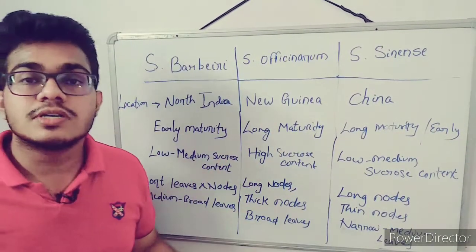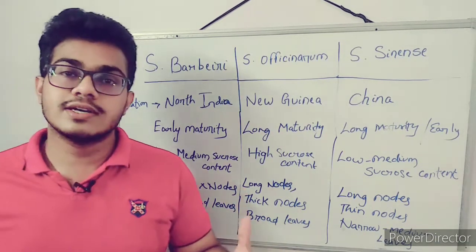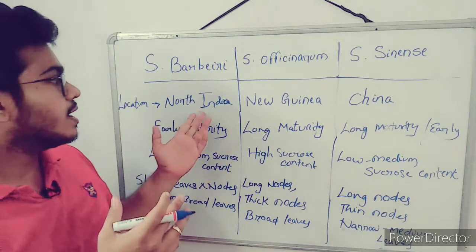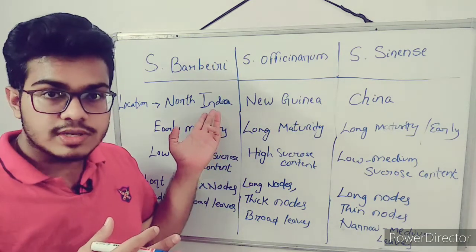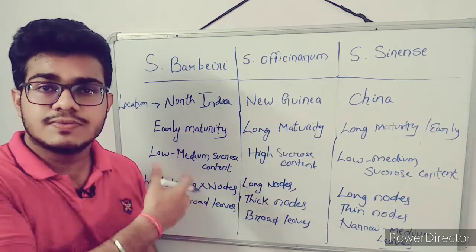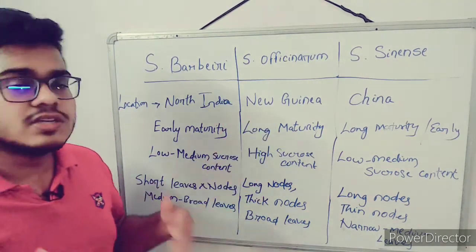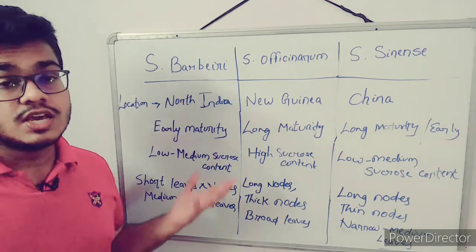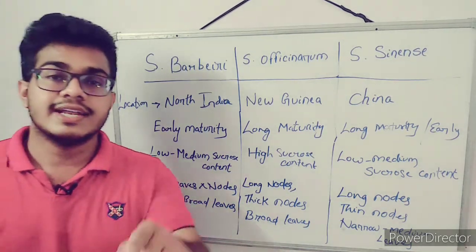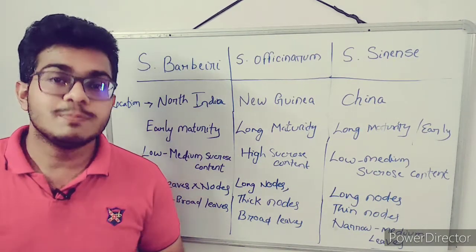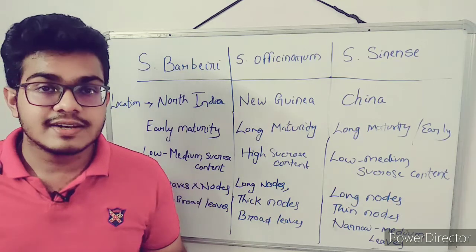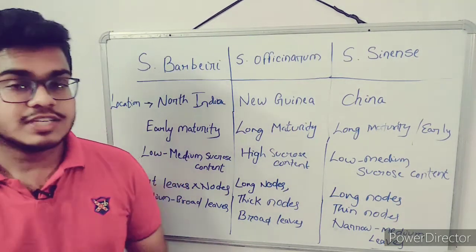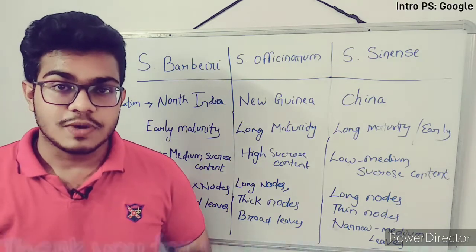So this is about the three species of sugarcane most important for the introductory part. Saccharum barbari originated in North India, Saccharum officinarum in New Guinea, and Saccharum sinensis in China. In the next video we will cover the complete botany of the sugarcane plant, planting materials, planting methods, and different varieties. Thank you for watching — keep liking, sharing, and subscribing.